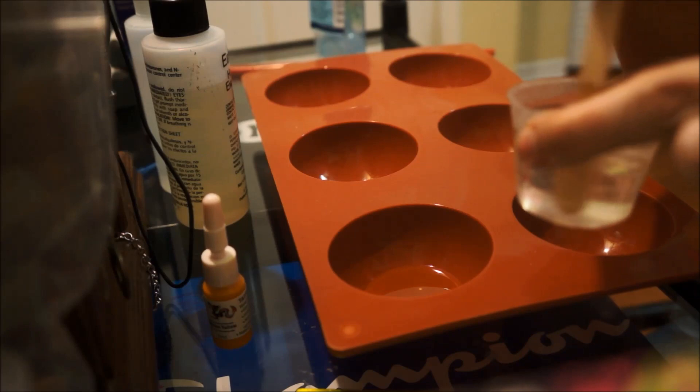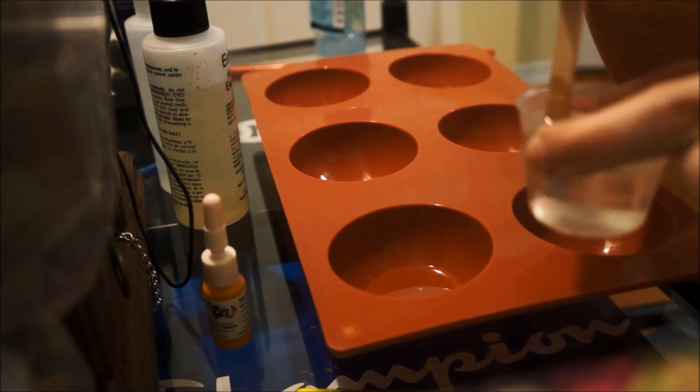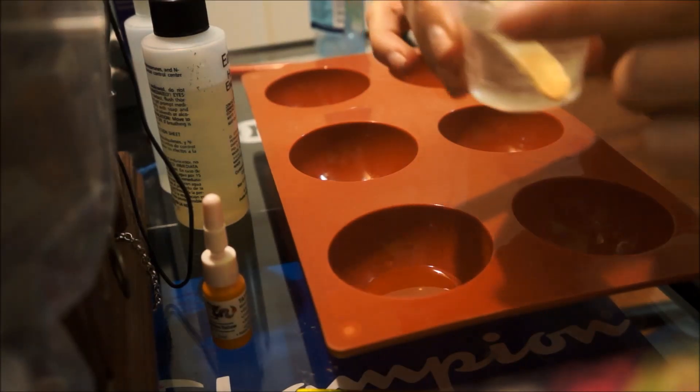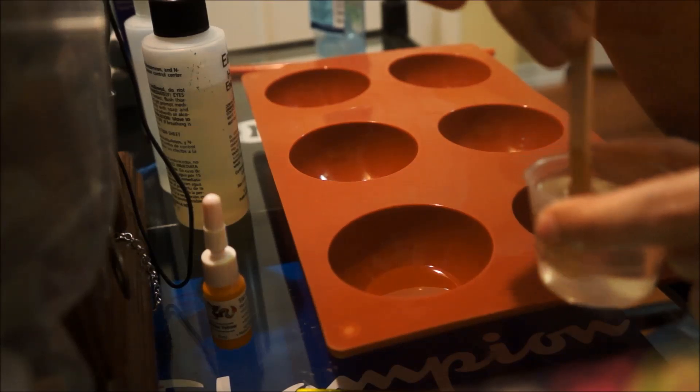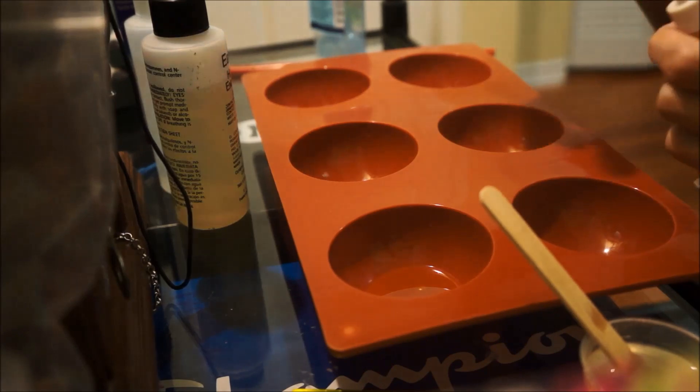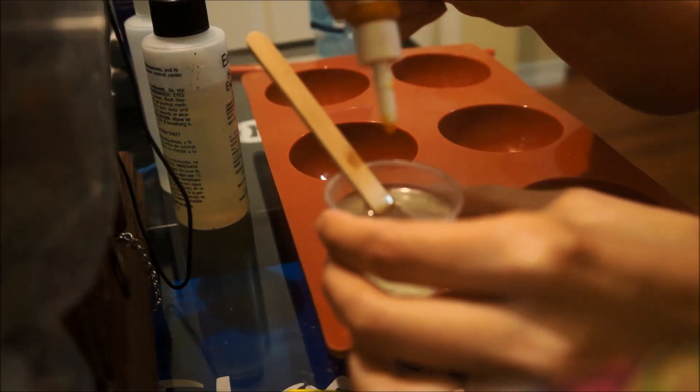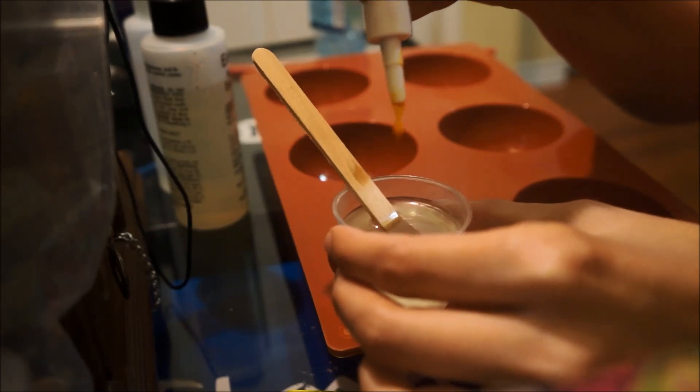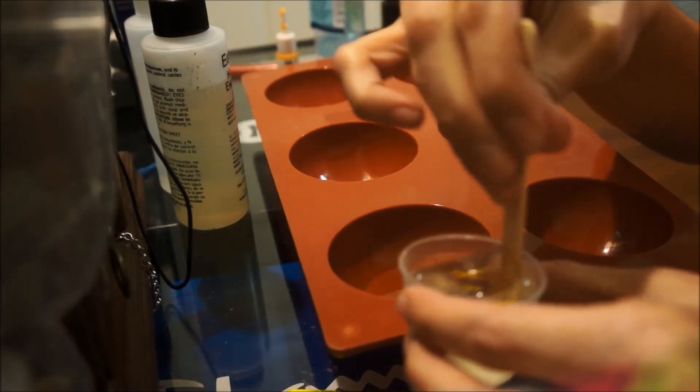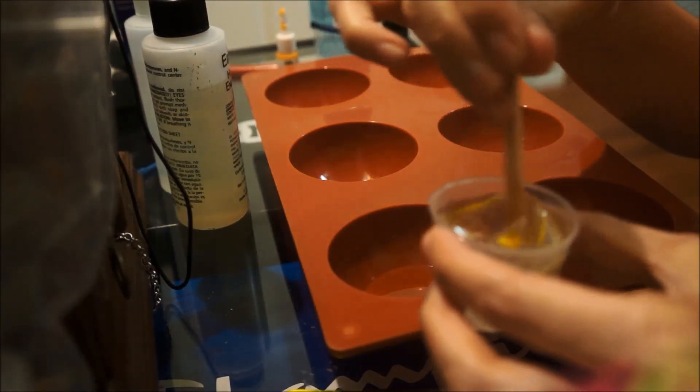So now I am mixing up the second batch of resin. I put about two tablespoons - one tablespoon of the resin, one tablespoon of the hardener, and I'm just mixing it. I'm also going to add the color to this. I'm going to add about three drops to this one, and just continue mixing this until it is all dissolved.